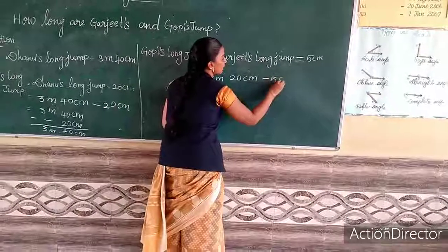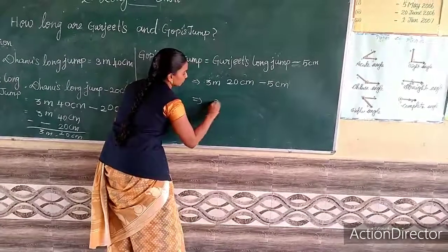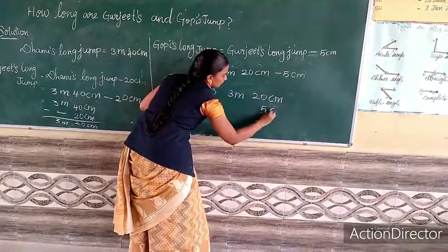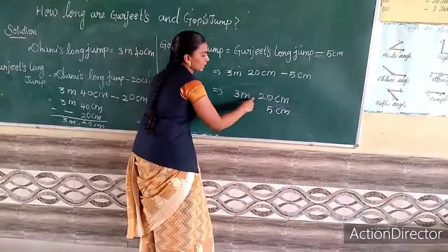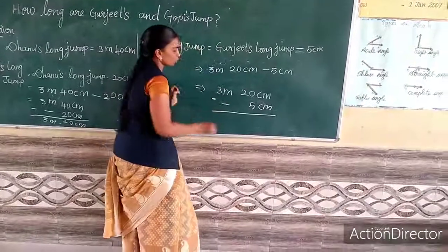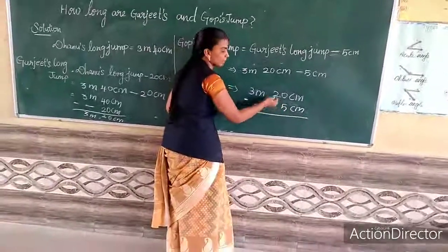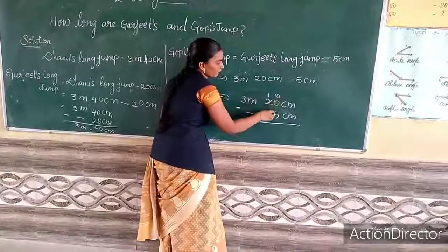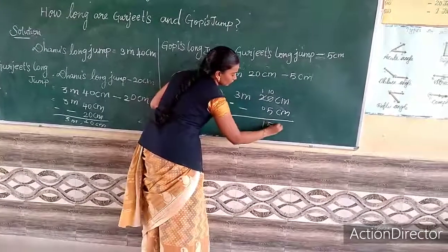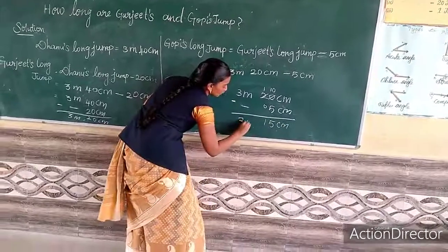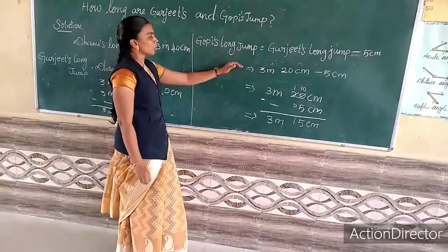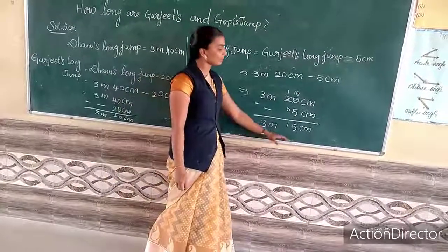We want to subtract 5 centimeters from Gurjit's jump of 3 meters and 20 centimeters. 0 minus 5 is not possible, so we borrow — it becomes 10; 10 minus 5 is 5. The 1 comes downwards leaving 1 in the tens place, so the answer is 3 meters and 15 centimeters. Gopi's long jump is equal to 3 meters and 15 centimeters.